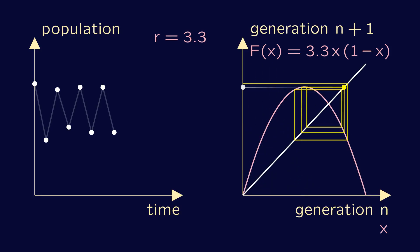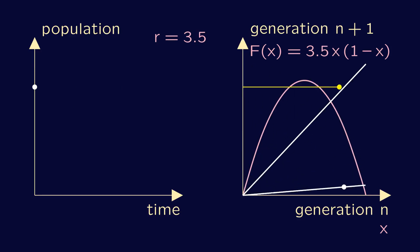The cobweb diagram in this case, if we ignore the initial bits, is a square. If we increase r a little bit more, the iteration settles into a four-periodic pattern. The cobweb diagram now somehow resembles two interlinked squares.